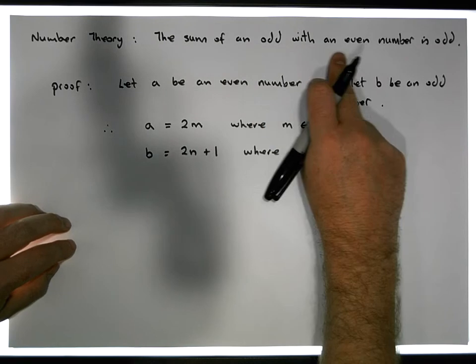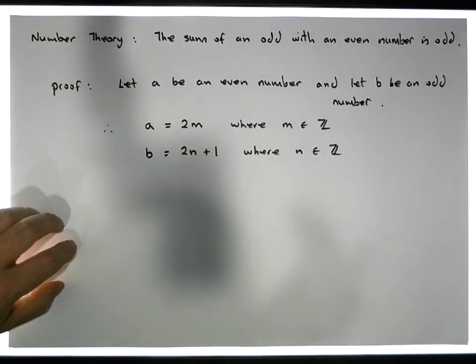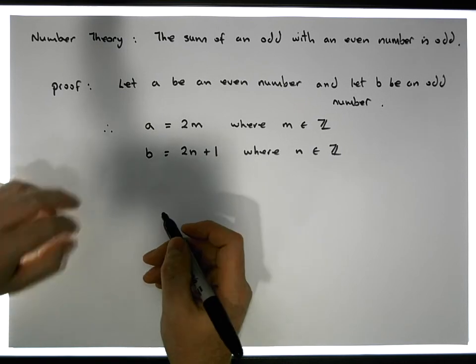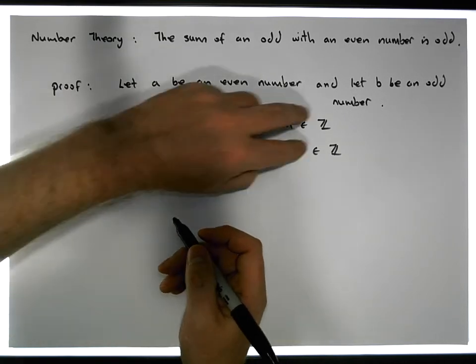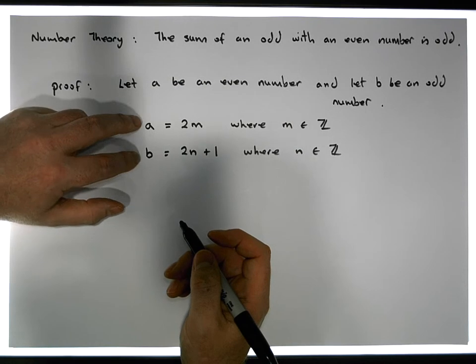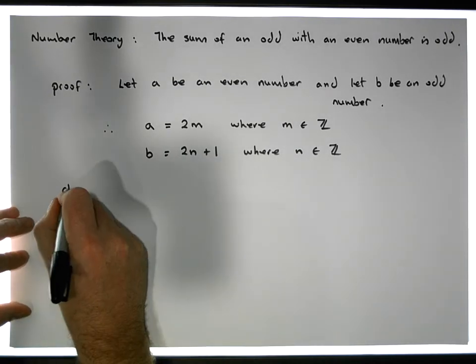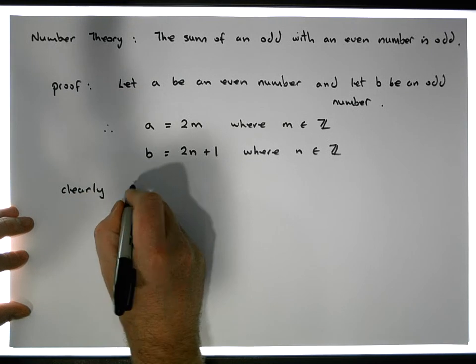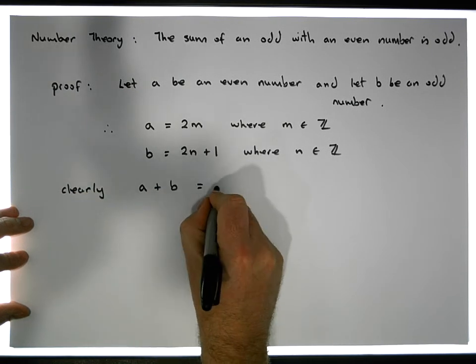So what we'd like to show is that the sum of an odd number with an even number is in fact odd. Now what we're going to do is we're just going to add A with B. But we know that addition is commutative in the integers, so A with B is the same as B with A. So clearly we have A plus B, which is the same as B plus A.